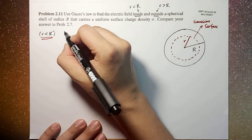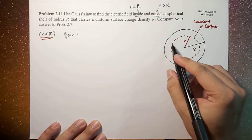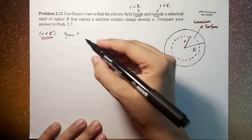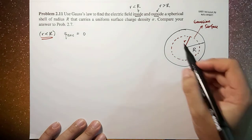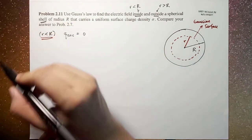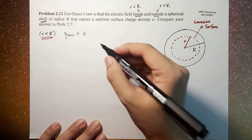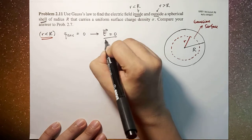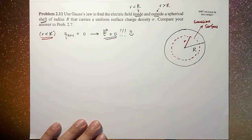First, we find the enclosed charge. The charge enclosed by this Gaussian surface is zero, because there is no volume enclosed. Remember, this is a shell, so there's nothing inside the shell. Therefore, using Gauss's law, the electric field will be equal to zero. Easy, right?